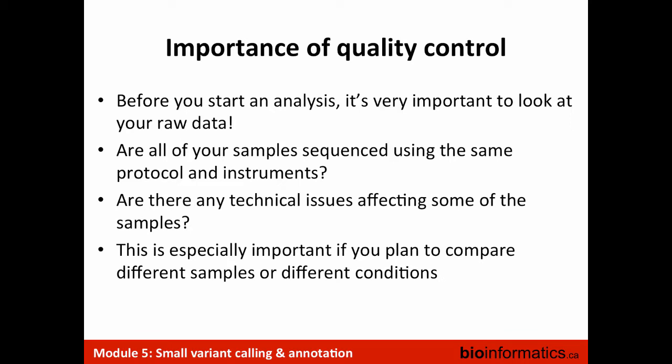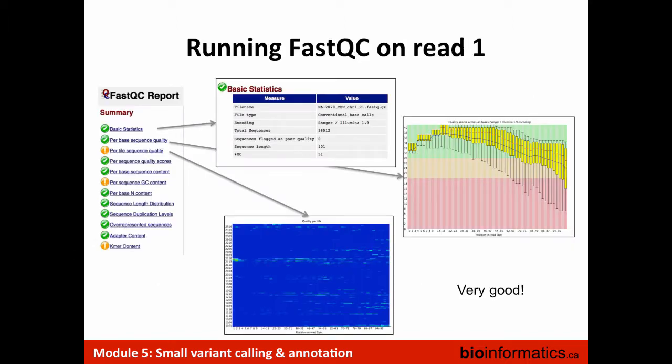The importance of quality control before you start an analysis: it's important that you look at your raw data, because otherwise everything you do downstream may not make sense. We're all sequencing on the same instrument, but this is especially true if you're getting data from different places. Are there any technical issues affecting some of the samples? It's really important to get a sense of what your data looks like.